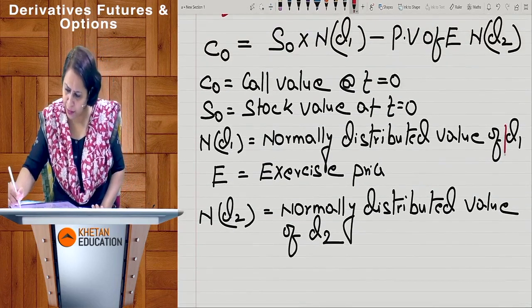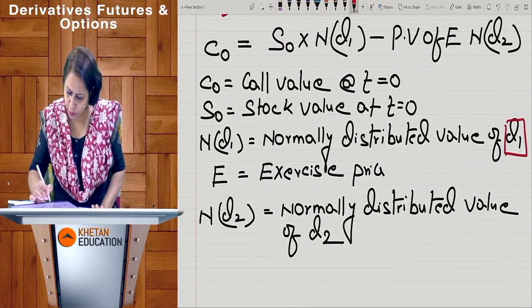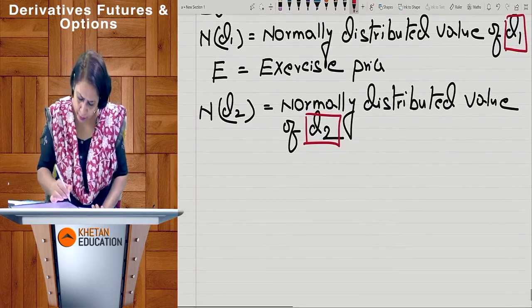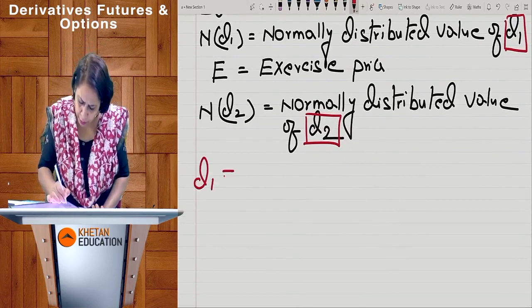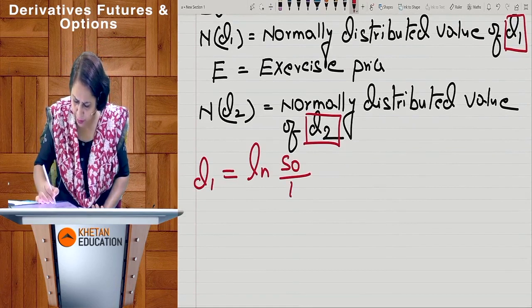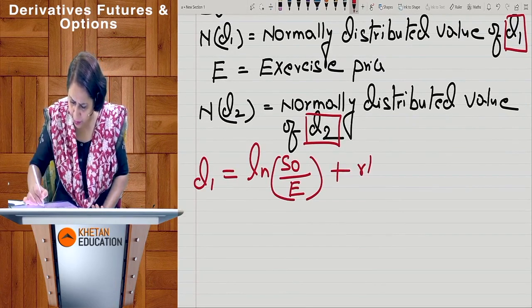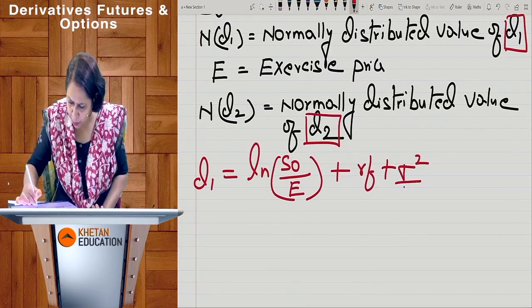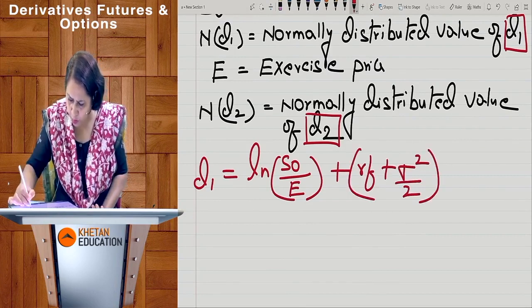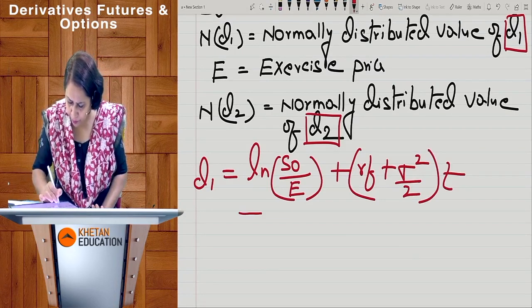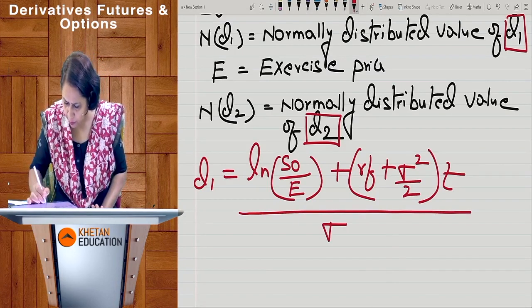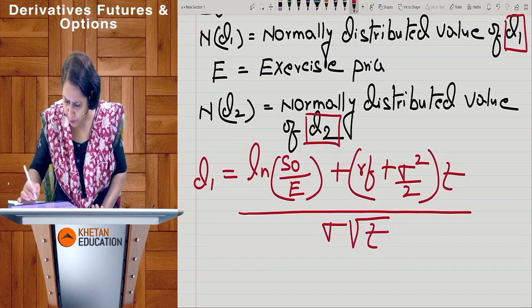There is D1 and D2 that we need to calculate. D1 = ln(S0/E) + (Rf + σ²/2) × t, all divided by σ√t.